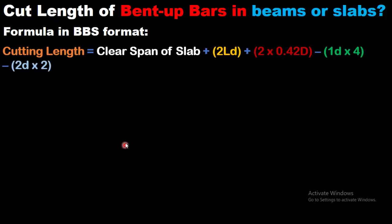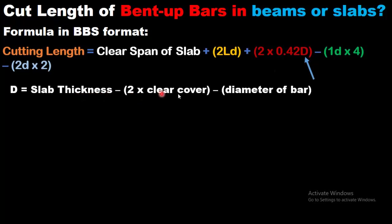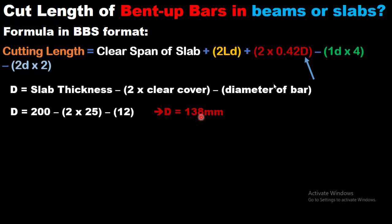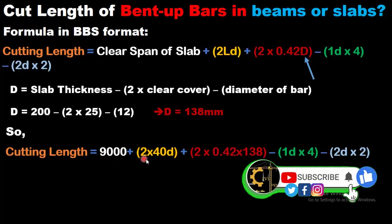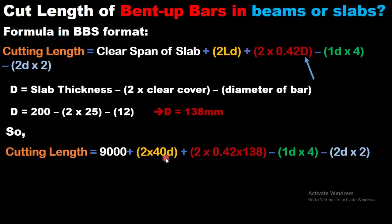Everything in this formula is known except capital D. Capital D equals thickness of the slab minus 2 times clear cover minus diameter of the bar. That is 200 (thickness of slab) minus 2 times 25 (clear cover from above and below) minus 12 millimeters (diameter of bar), which equals 138 millimeters. So capital D equals 138 millimeters. Putting the values: clear span is 9000 mm, and 2 times 0.42 times D gives the inclined length where D is 138 millimeters.